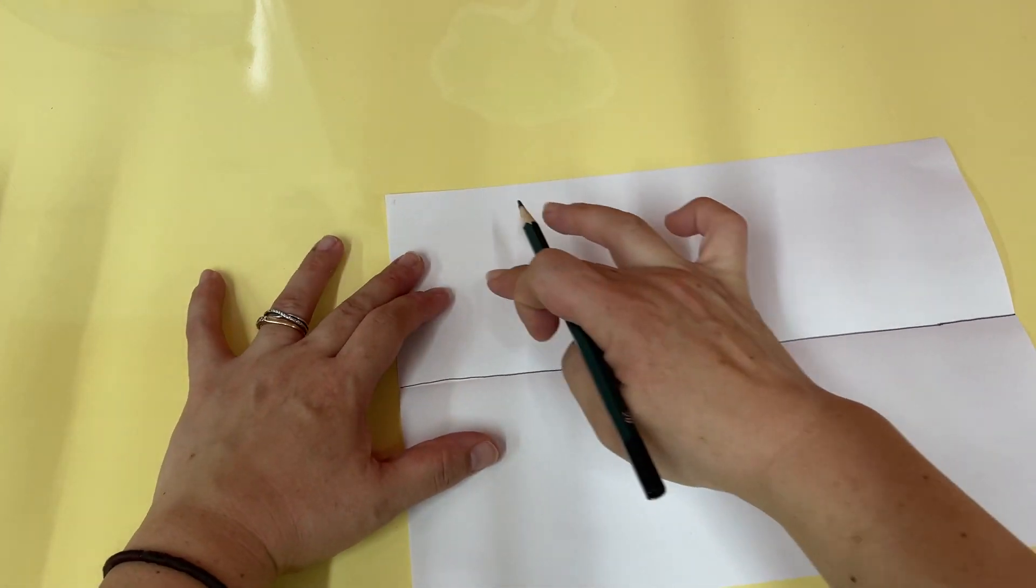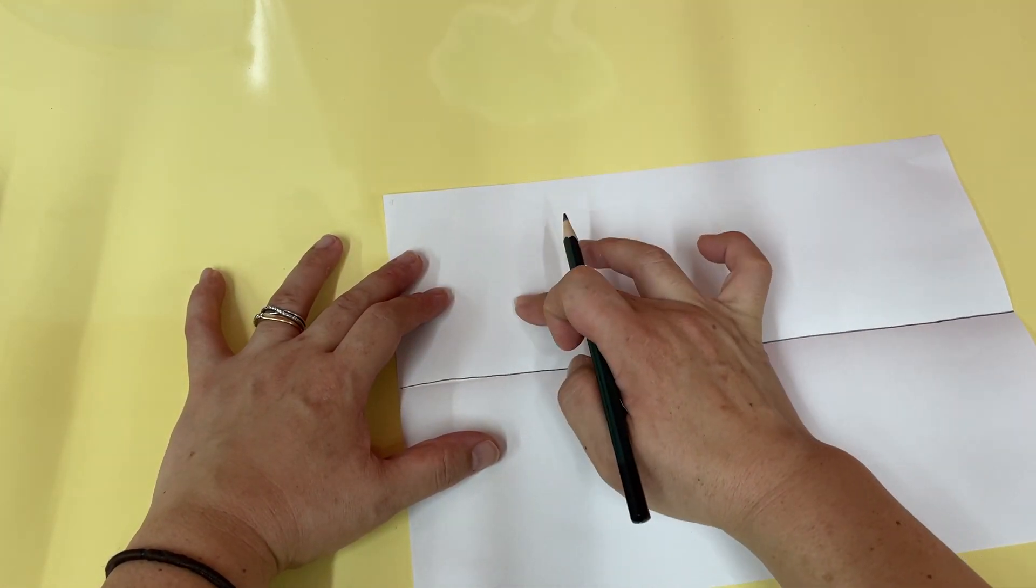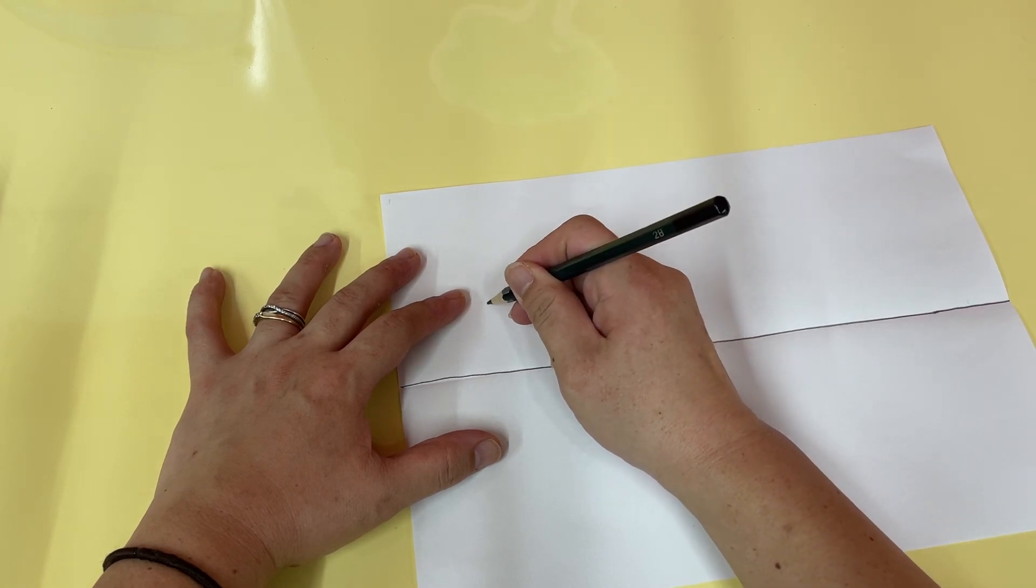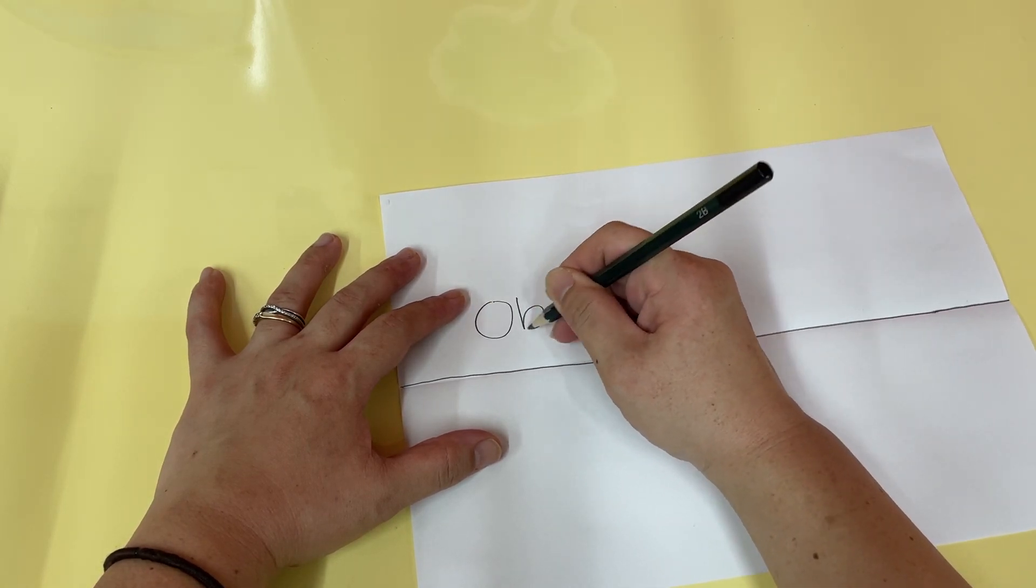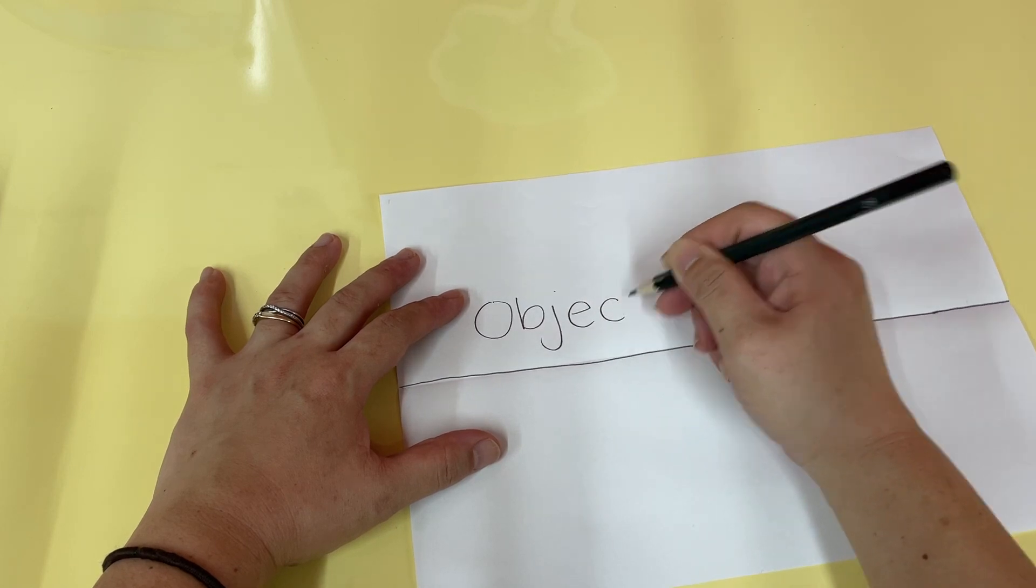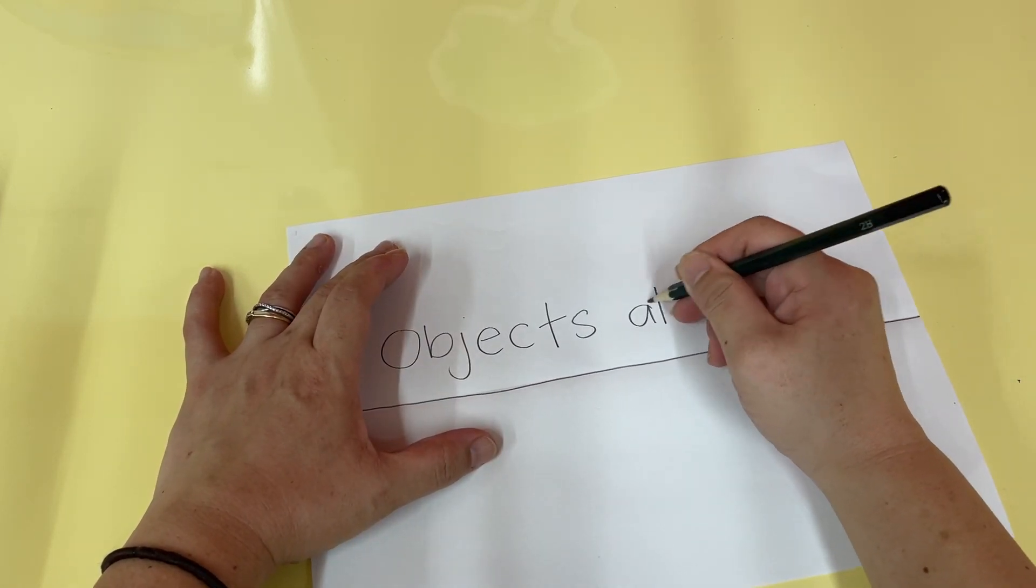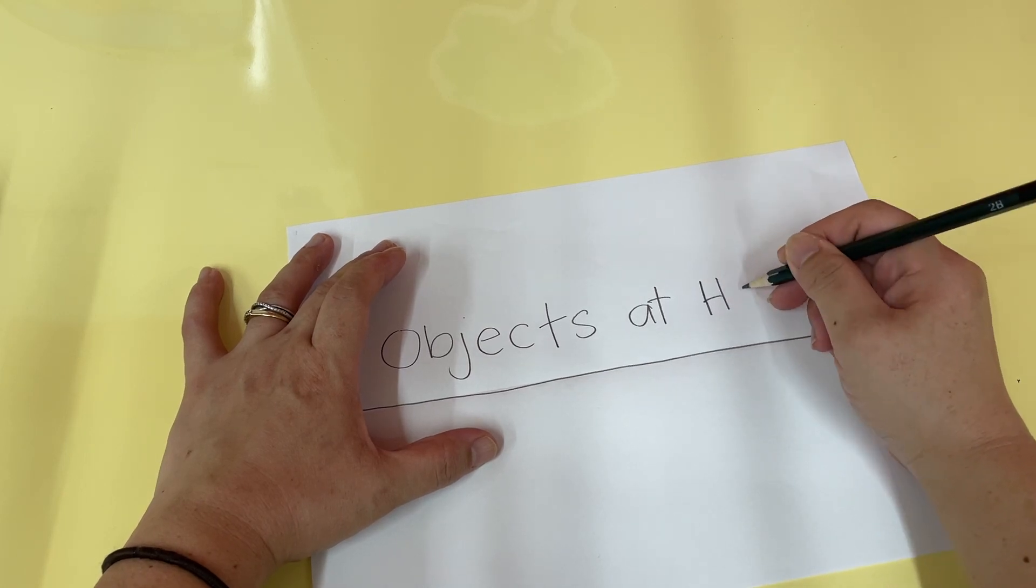And then on one side, you write objects at home. So here we have O, B, J, E, C, T, S, at home.